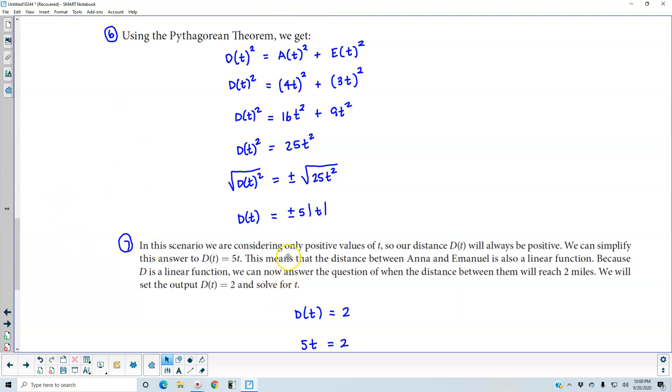Now, in this scenario, we are considering only positive values of t. So our distance D(t) will always be positive. So we can simplify this answer to D(t), which is equal to just 5t.